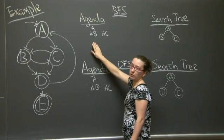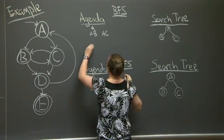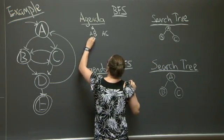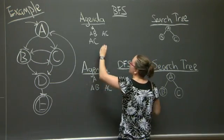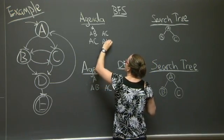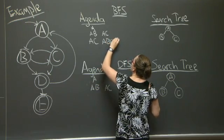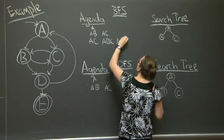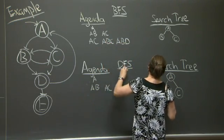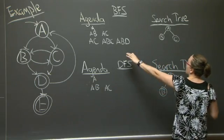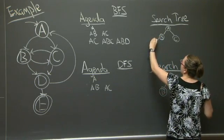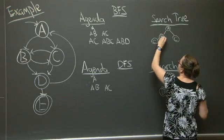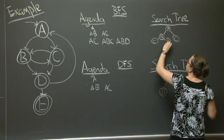So AC, I'm just going to move to the front of the queue, or the agenda. And I'm going to add ABC and ABD. And I got there through B. So I'm going to add C and D here.